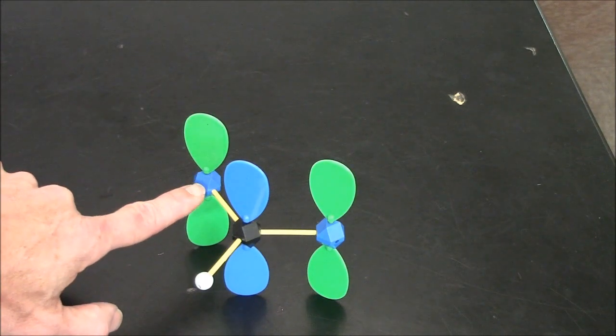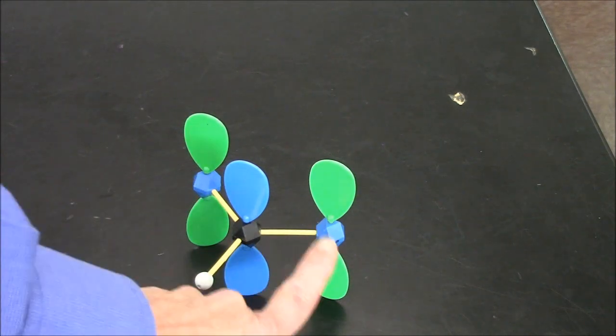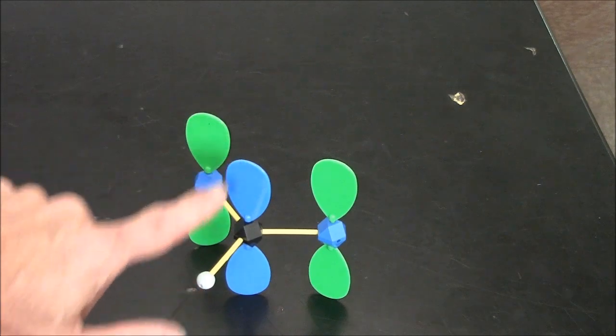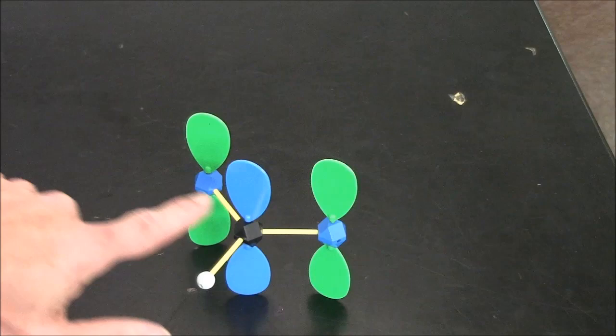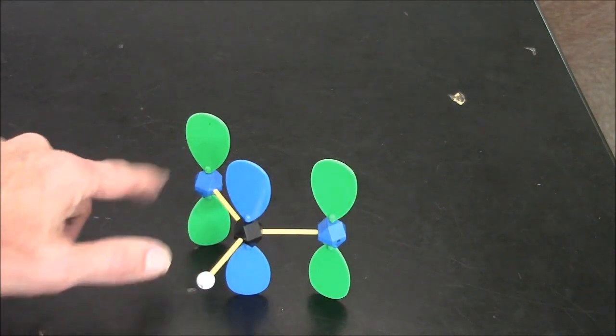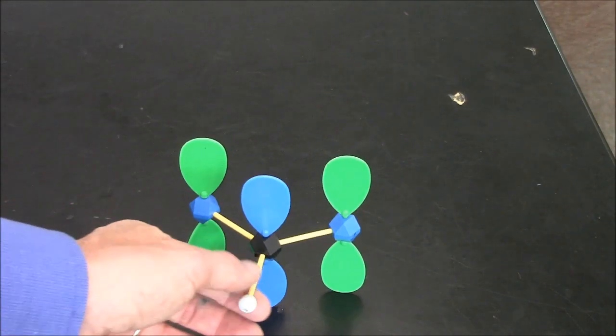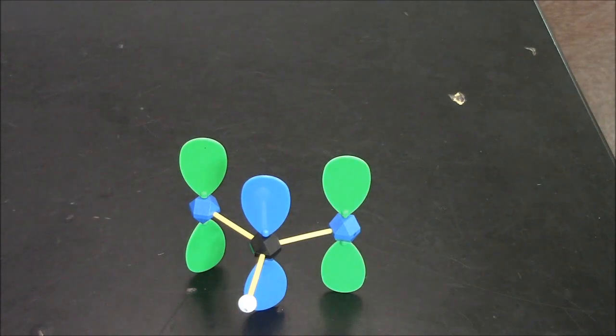This oxygen has a p orbital. This oxygen has a p orbital. The central carbon has a p orbital. Where's the double bond? Is it here? Is it here? In reality, it's in both places. It's symmetric. That's what the resonance model is all about.